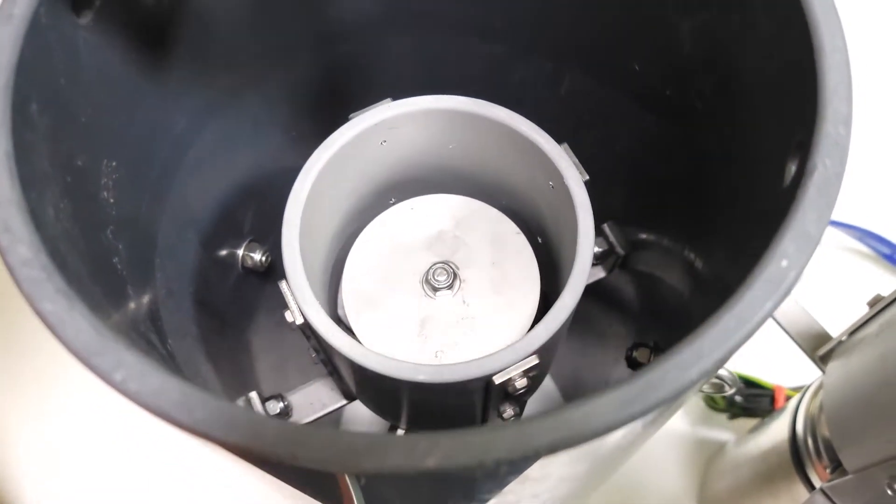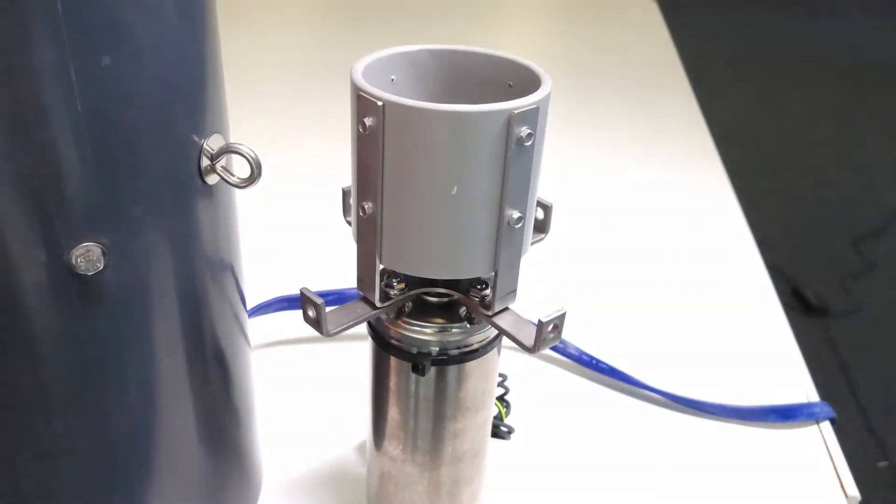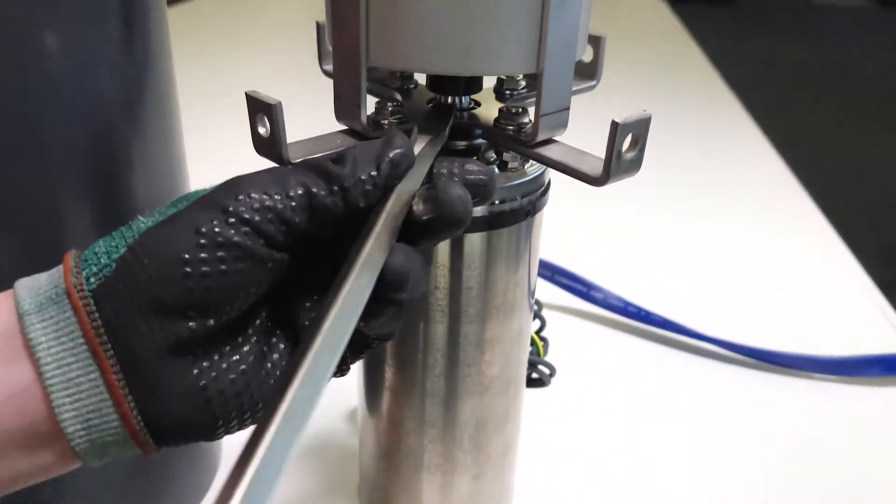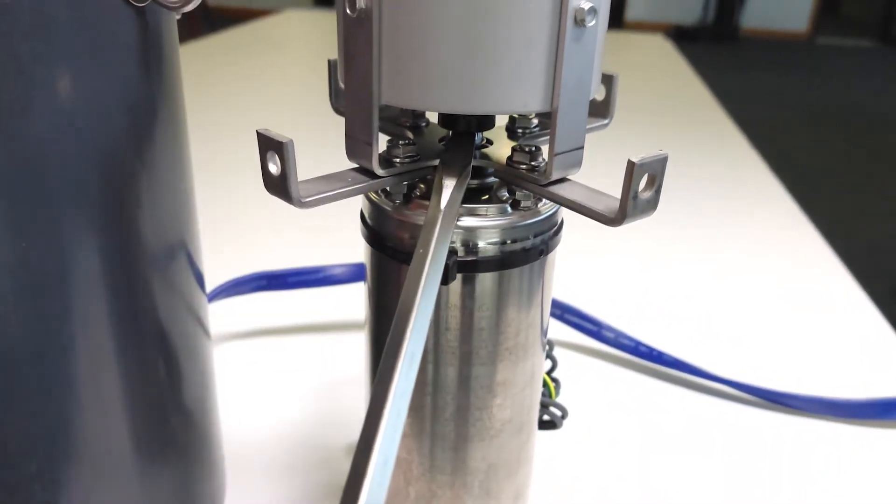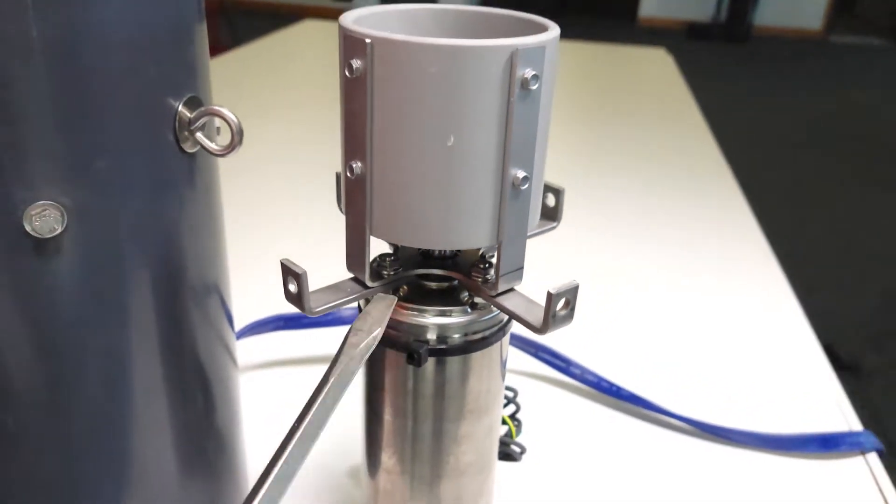Locate the access hole in the side of the pump housing. Insert a large flathead screwdriver into the gap below the propeller and pry the propeller upwards to remove. If it doesn't release, rotate the propeller and pry upwards from a few angles.